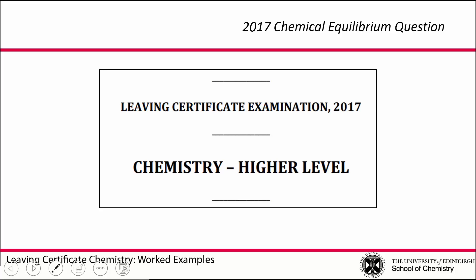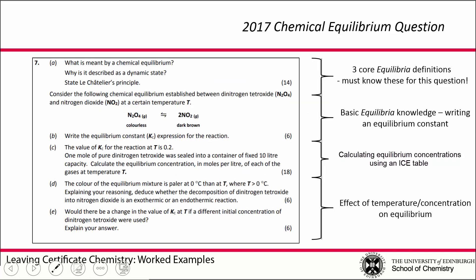This is the 2017 chemical equilibrium question. Looking at the question overall, it's a pretty standard question covering pretty much everything you will have covered in chemical equilibrium — starting off with the three core equilibrium definitions, then looking at setting up an expression for the equilibrium constant, using this expression to work out the equilibrium concentrations, and then looking at the effect of temperature or concentration on the equilibrium and Le Chatelier's principle in practice.